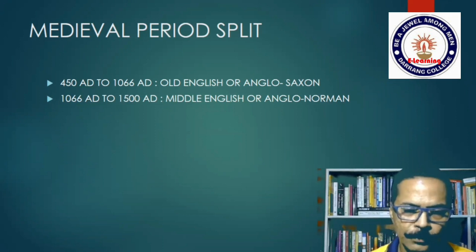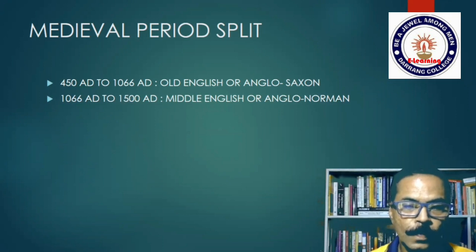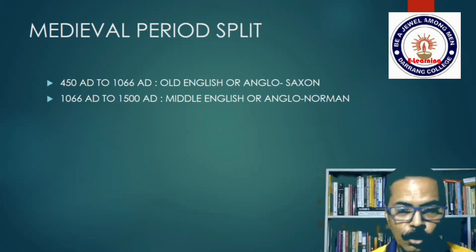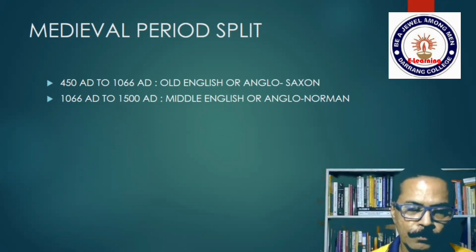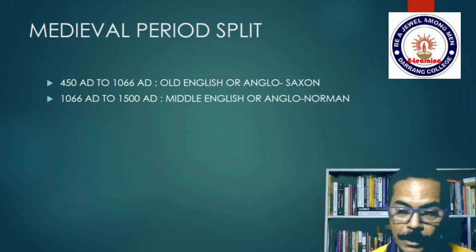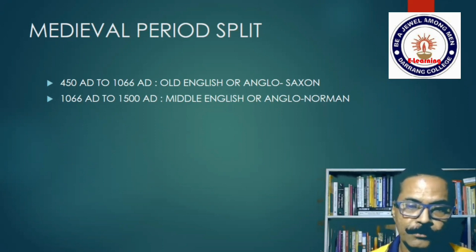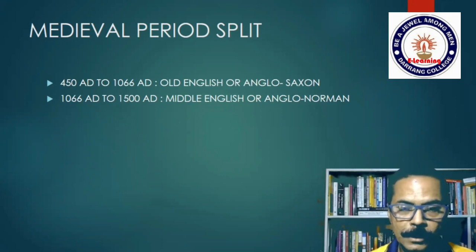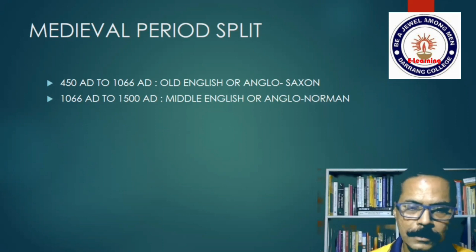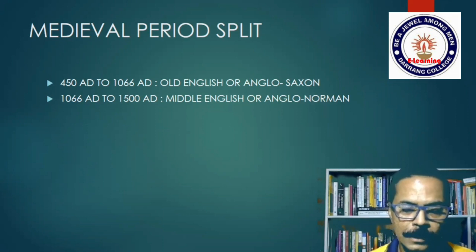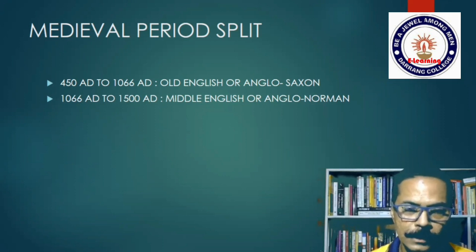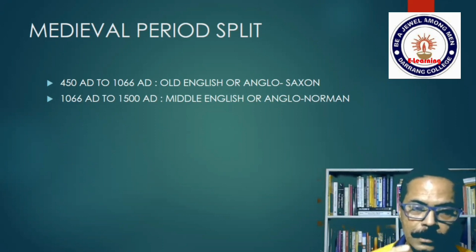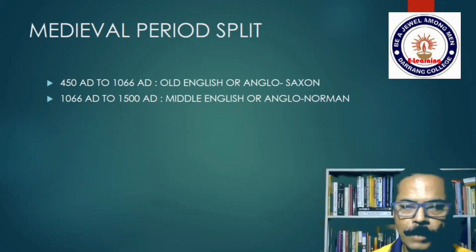1066 begins another period within the medieval period, called Middle English or Anglo-Norman. English now came into contact with the Norman French language and evolved, through mutual influence, into a new kind of language also called Middle English — very much influenced by Norman French vocabulary and pronunciation. This period is also called Anglo-Norman because the Angles blended with the Normans, who became the new rulers of England.